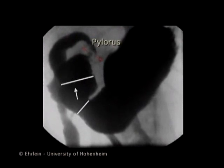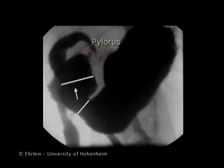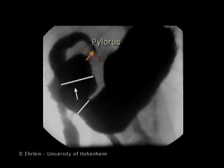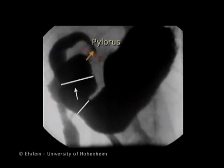When the peristaltic wave moves over the middle of the antrum, the pylorus opens and small quantities of gastric chyme are swept into the duodenum. This is the emptying phase.